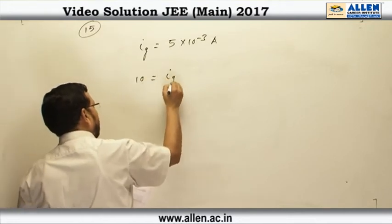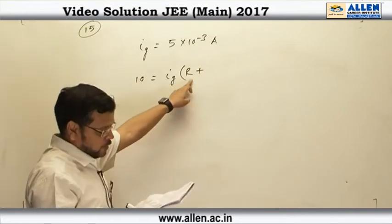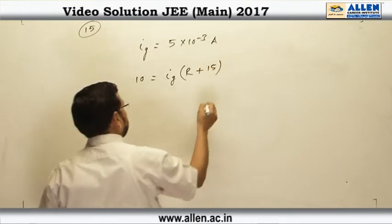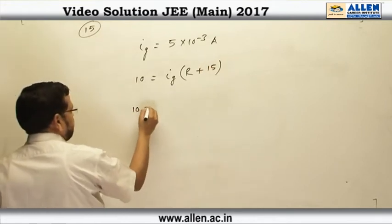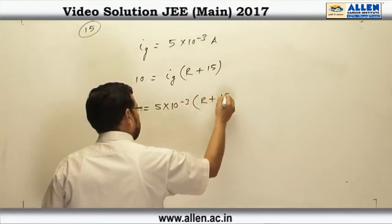10 should be equal to I g into the resistance which you are going to add in series with this galvanometer plus the coil resistance of galvanometer. 10 is equal to 5 into 10 raise to power minus 3 R plus 15.